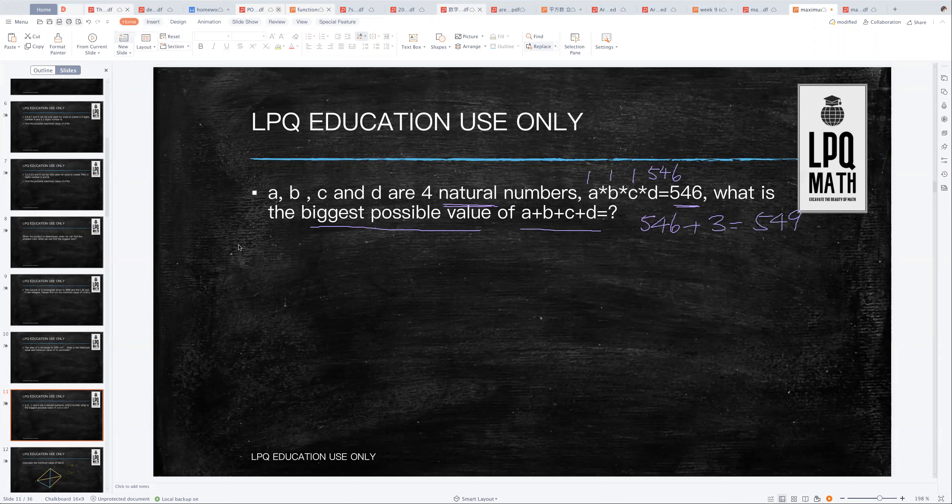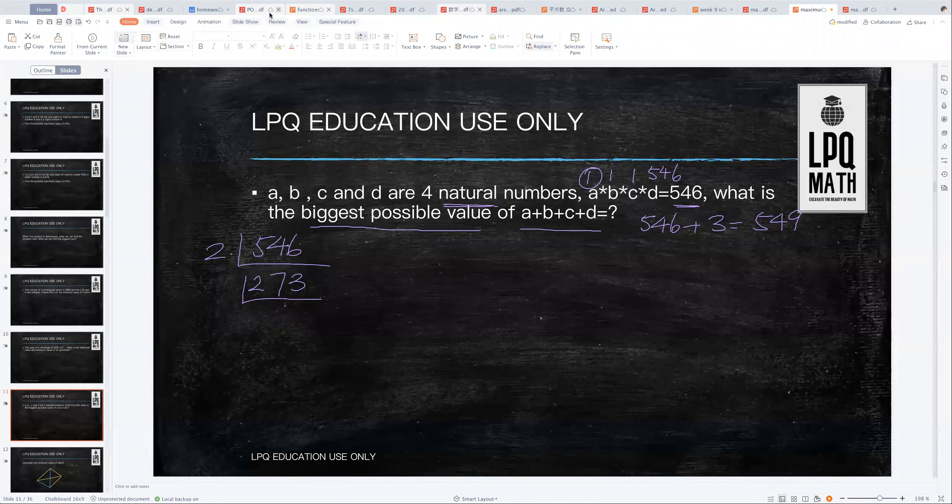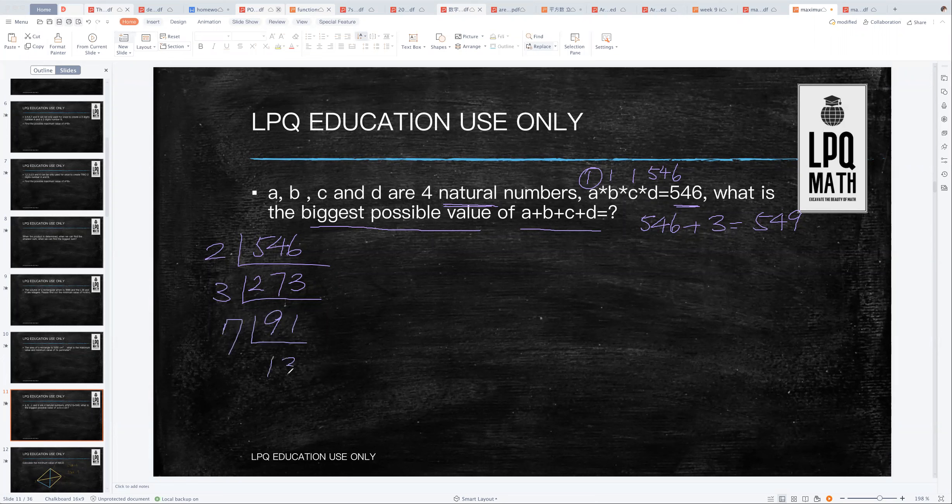But what if I told you that A and B and C and D cannot be equals to each other? So that means only one of the numbers could equal one, but the rest of them cannot be one anymore. It's 2, 7, 3, then 2. One, three. So 91 is divisible by 7, which is 13.